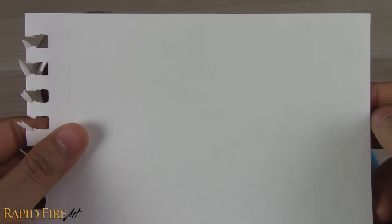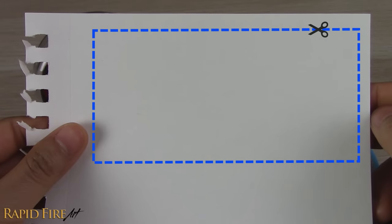The first step is to cut out a rectangle. The exact dimensions aren't important, but in case you want to know, these are the rough dimensions of the one that I'll be cutting out in a second.